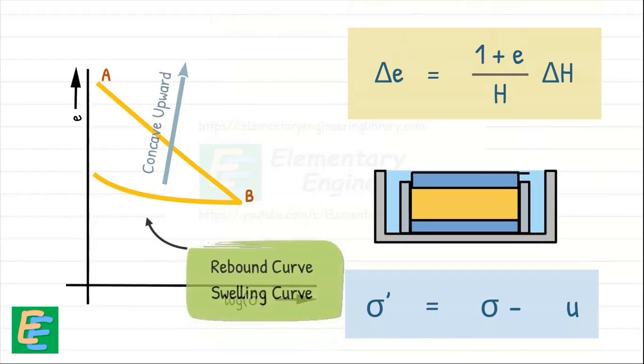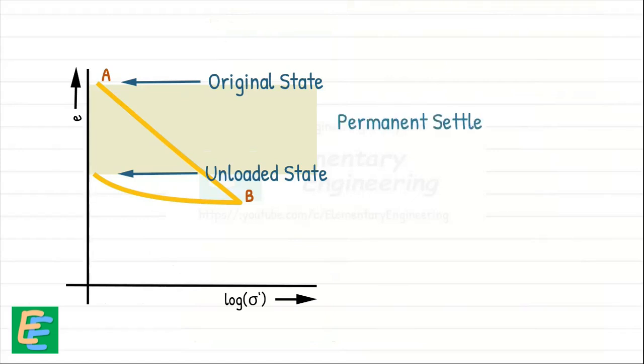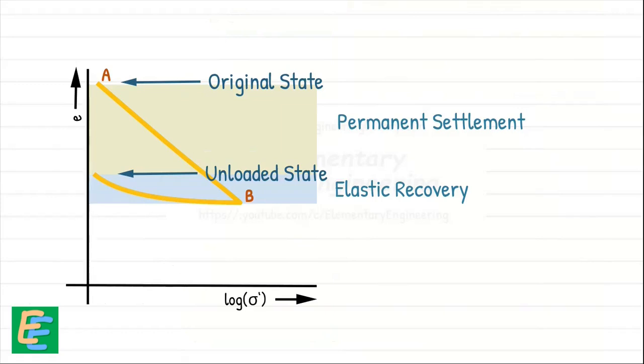This part of the curve is known as the rebound curve or swelling curve. It's important to note that the soil sample could not fully recover its original state and void ratio that was at the beginning of the test. This signifies that some amount of permanent settlement has occurred in soil due to loading. The portion of the deformation that is recovered after unloading is attributed to the elastic recovery of the soil structure. Let's mark the final point on the rebound curve as C.